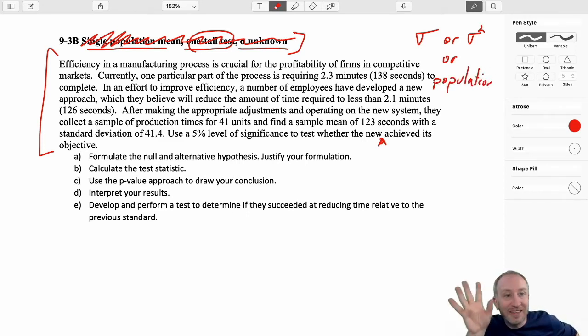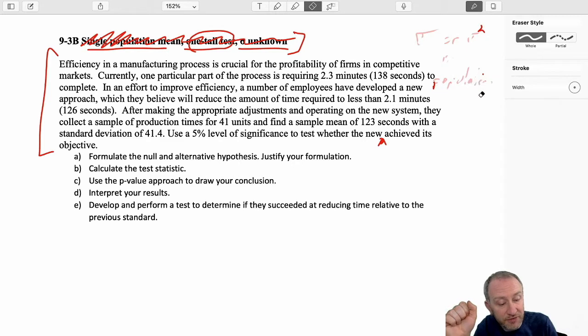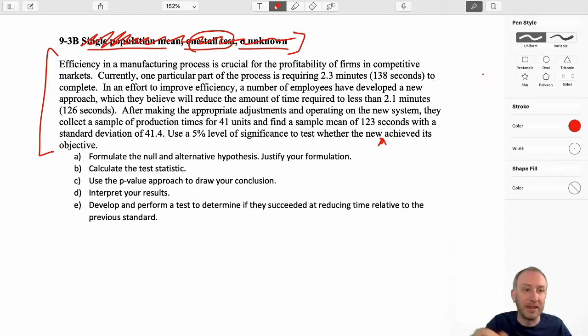Either sigma or sigma squared or the word population. If you don't see any of those, you're working with sample data. It's really as straightforward as that.